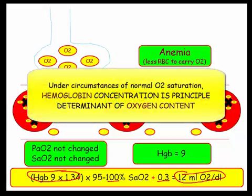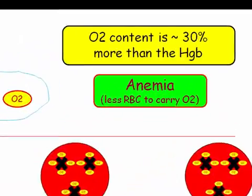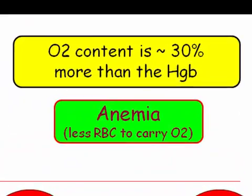Anemia affects the oxygen content, and they love this fact. This is money in the bank. You are guaranteed to see some variation on this theme. For ease of calculation, the oxygen content is essentially 30% more than the hemoglobin value under normal circumstances of oxygenation.